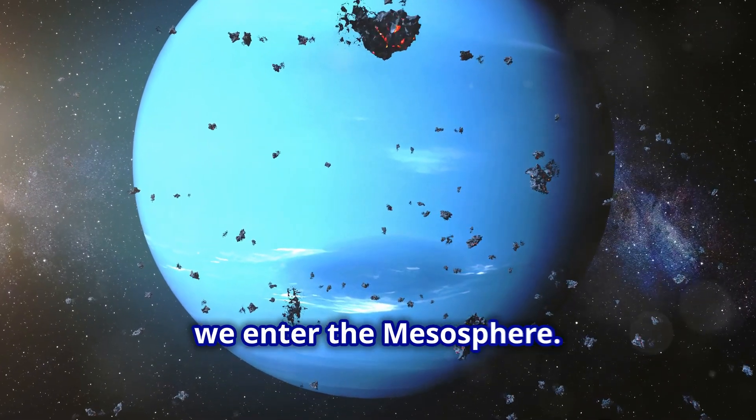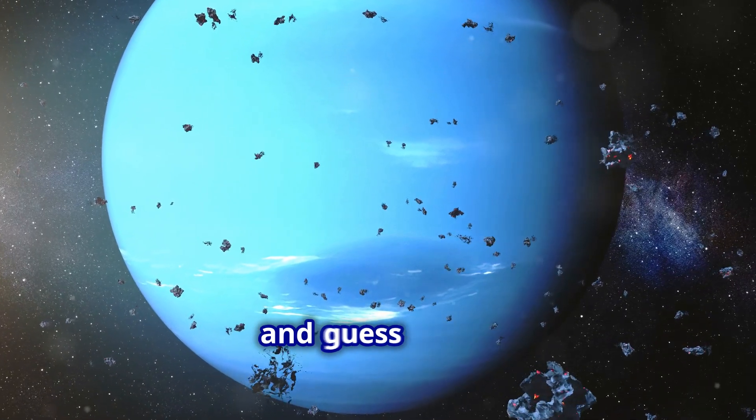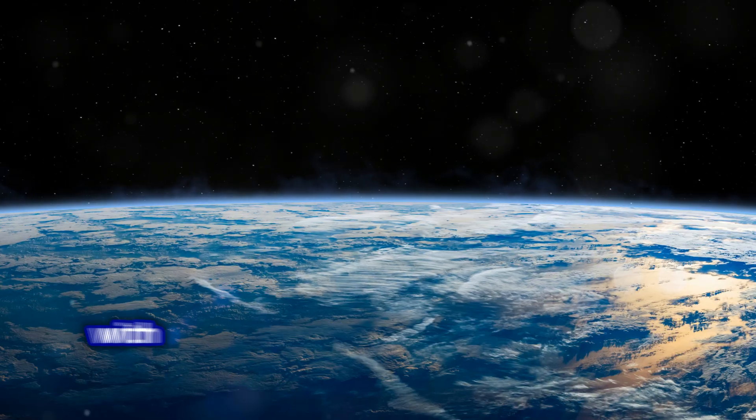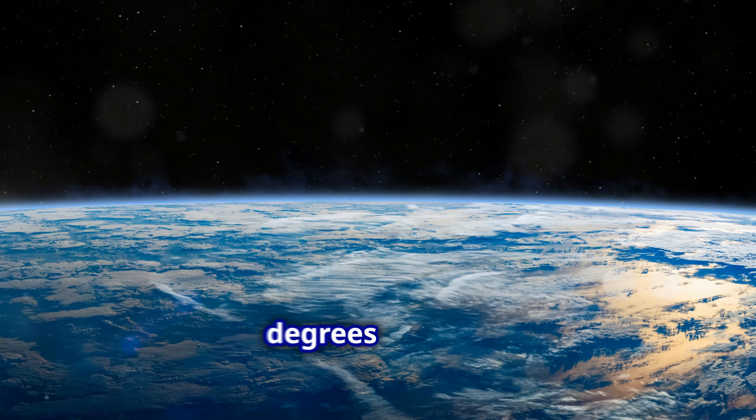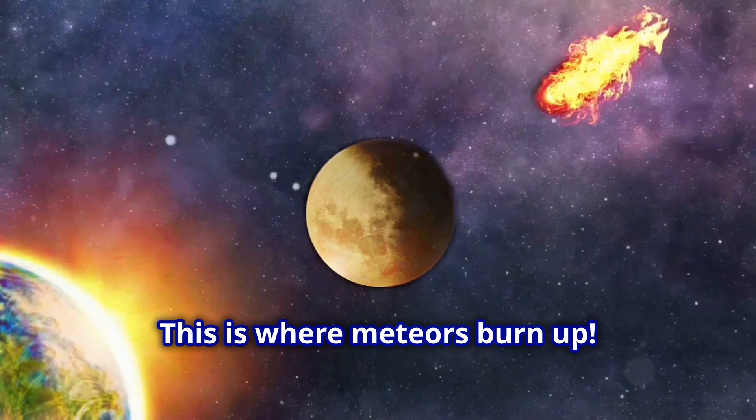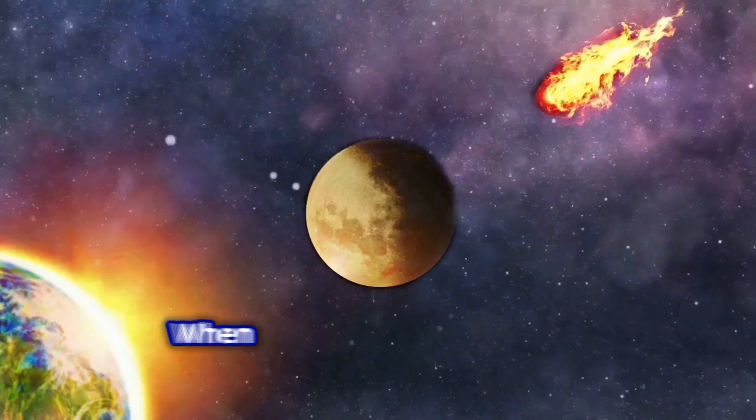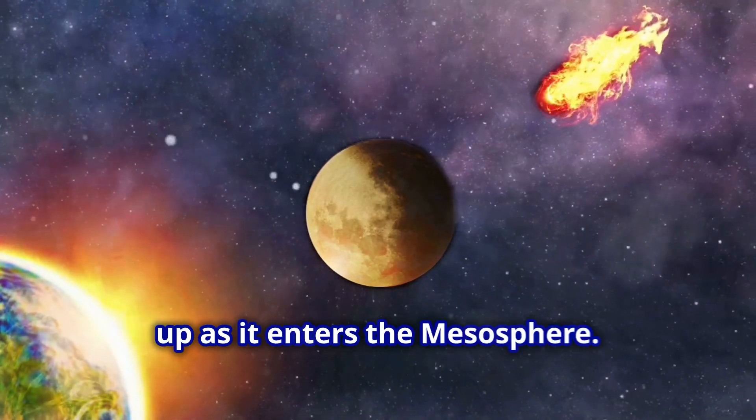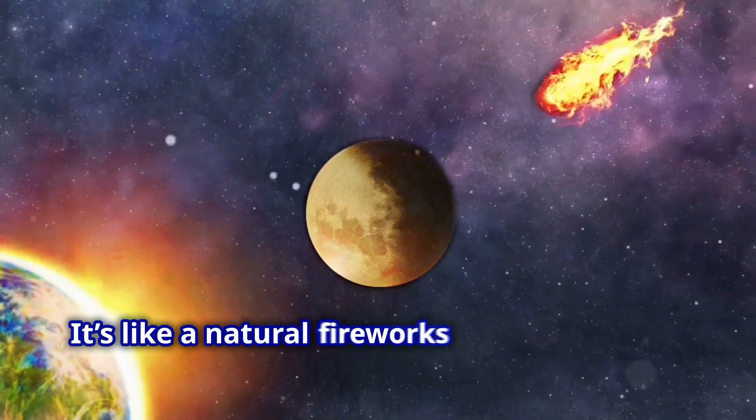Flying higher, we enter the mesosphere. It's super cold here, and guess what? The mesosphere is the coldest layer of our atmosphere, with temperatures dropping as low as minus 90 degrees Celsius. Brrr, that's chilly. This is where meteors burn up. Shooting stars, anyone? When you see a shooting star, you're actually watching a meteor burning up as it enters the mesosphere. It's like a natural fireworks show in the sky.